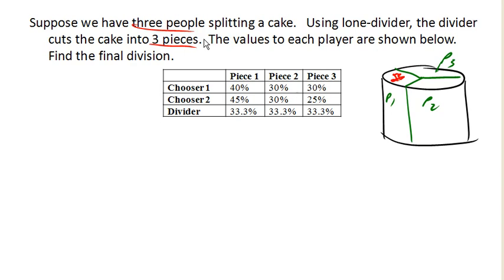Now, chooser two, another person playing, really doesn't like piece three as too much. Piece two's okay, but piece one is the only one that they value as a fair share. They value it at 45%.